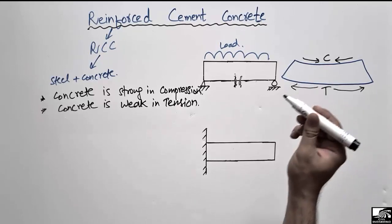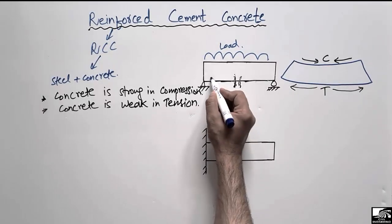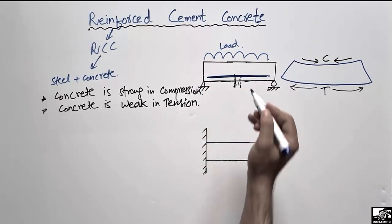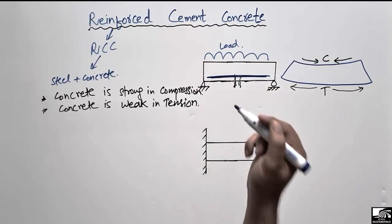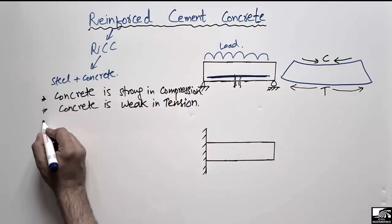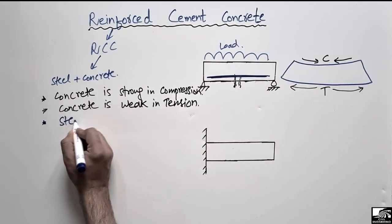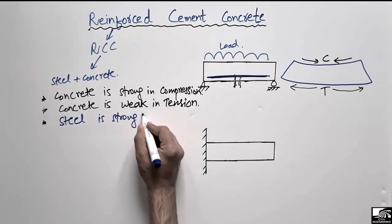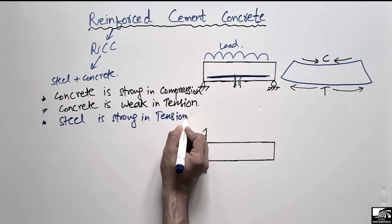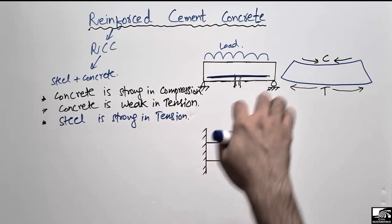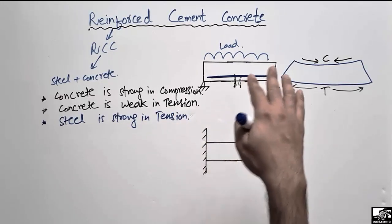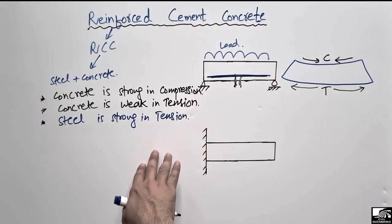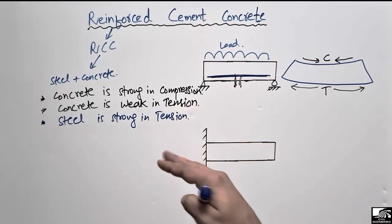What we do is provide a steel bar at the bottom, and this steel bar is responsible for taking the tensile stresses of the beam section. Steel is strong in tension. By the combination of steel and concrete, the member can take both compressive as well as tensile loads.